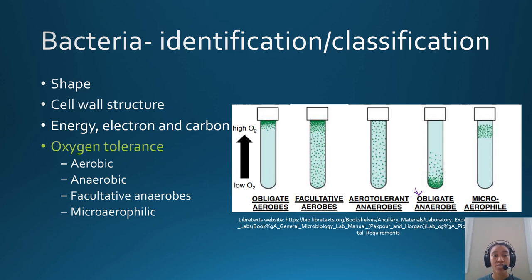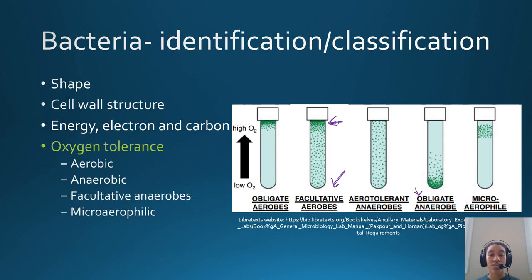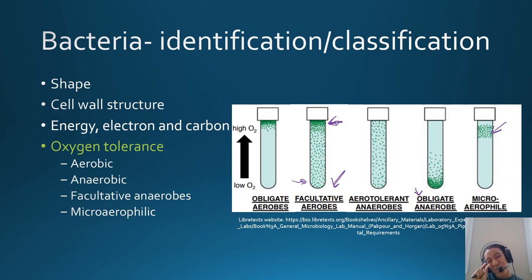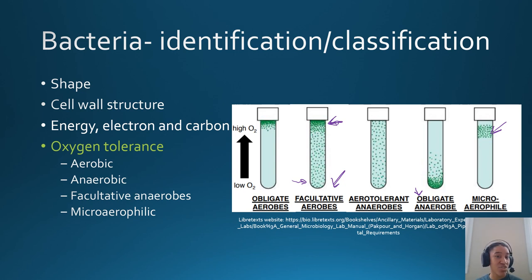Facultative anaerobes can live in anaerobic environments but prefer to have oxygen. As shown in the test tube image, most cells locate at the top but can also live at the bottom, suggesting these organisms have pathways to switch between using oxygen and not using it. Microaerophilic organisms only want a little bit of oxygen — too much or too little and they'll die; they need a very specific amount. Aerotolerant organisms just don't care — give them oxygen or not, they're fine either way.